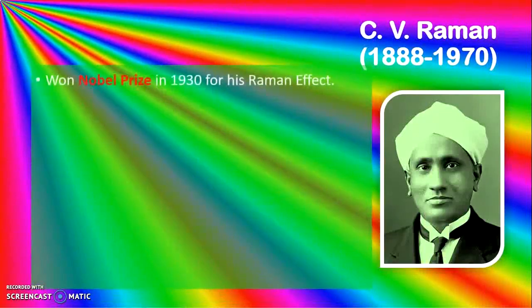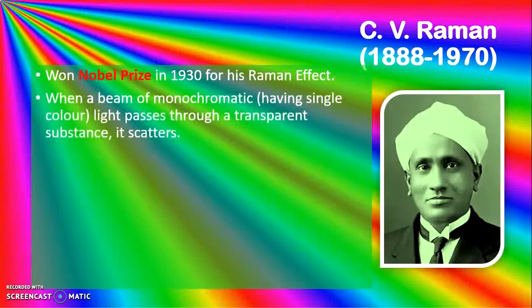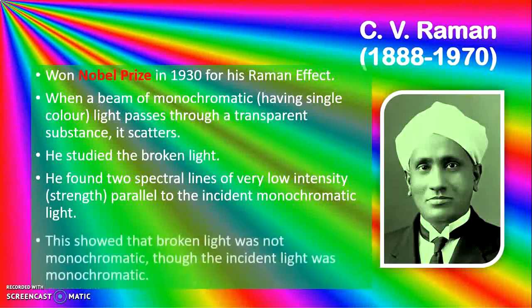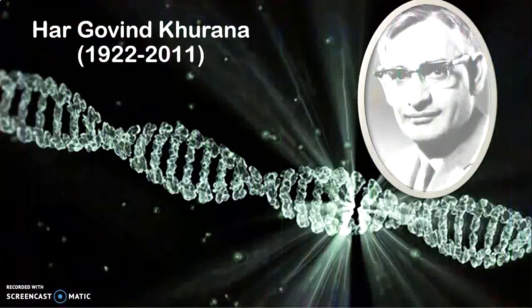C.V. Raman — who can forget him? Sir C.V. Raman won the Nobel Prize in 1930 for his Raman effect. In his explanation, he said that when a beam of monochromatic — single color — light passes through a transparent substance it scatters. He studied the scattered light and found two spectral lines of very low intensity parallel to the incident monochromatic light, showing that the scattered light was not monochromatic even though the incident light was.